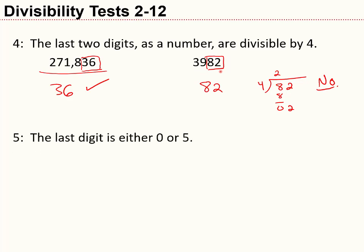Divisibility by 5 is a very straightforward trick — you probably know this already. If the last digit is either 0 or 5, then the number is divisible by 5.